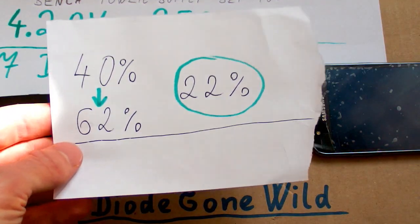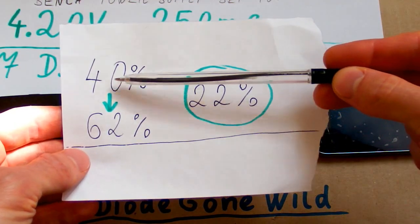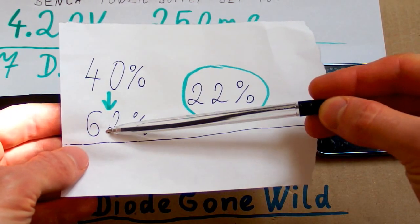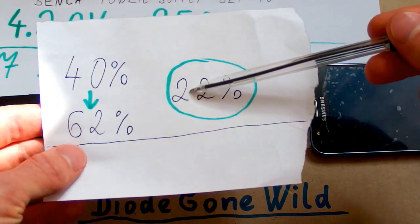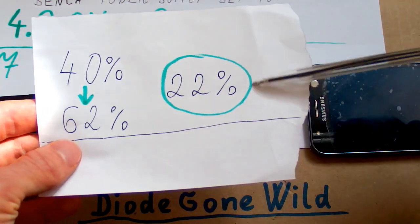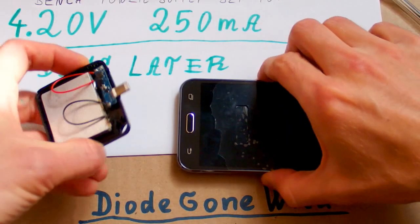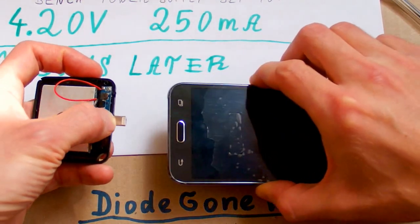For the first time it was able to charge my phone from 40% to 62%, so it gave me 22% extra charge. Now let's do the test again to see if I was able to restore the full capacity.